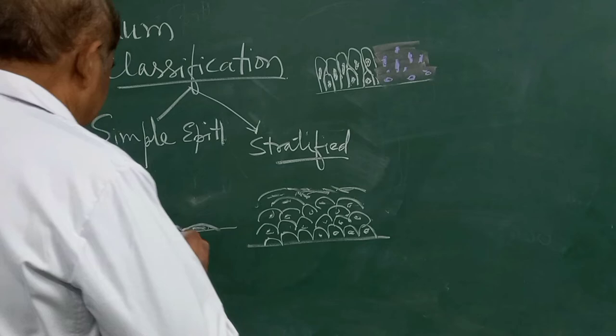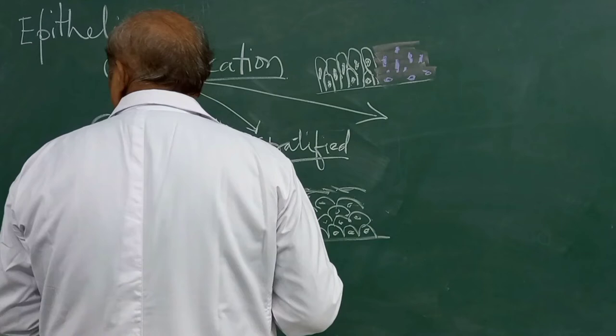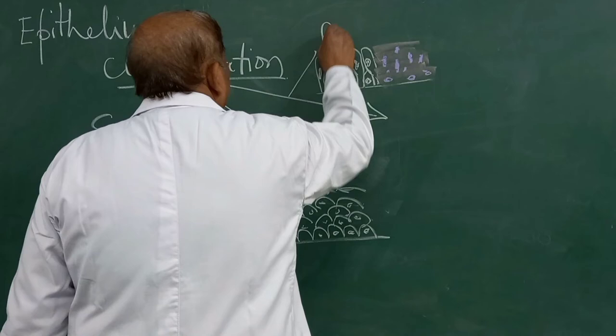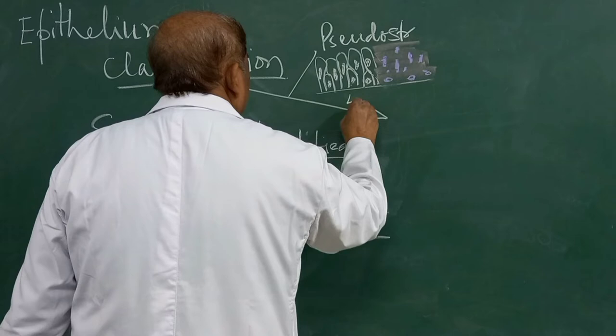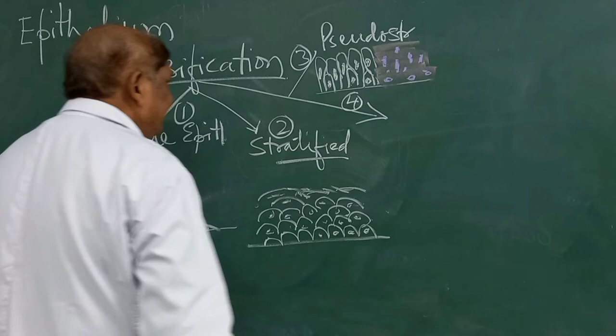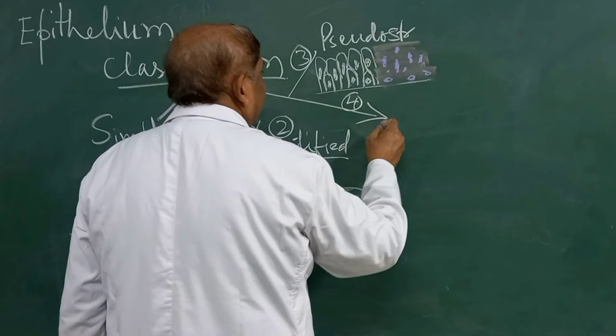Another type of classification, besides simple, stratified, and pseudo-stratified, is the fourth type, which is called transitional epithelium.